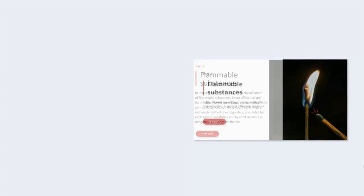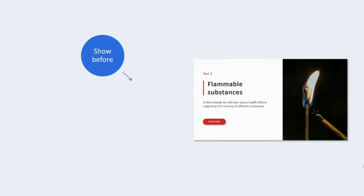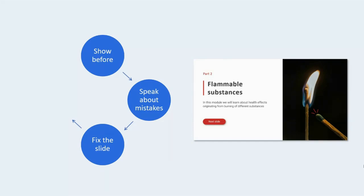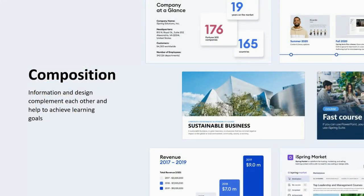During this session we will show you the 'before,' speak about the design mistakes on a slide, look at the base to fix the slide, and see the results. Now let's start with the first rule of graphic design: composition. In a good online course, information and design complement each other and help achieve learning goals. Information on the slide and visual elements work as a single mechanism — they attract and hold students' attention and help them remember information better. When all elements on a slide look harmonious, they form a composition.